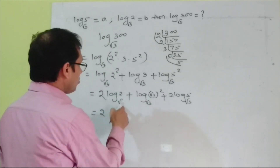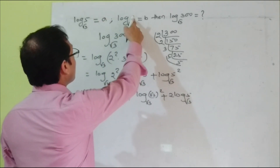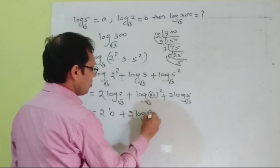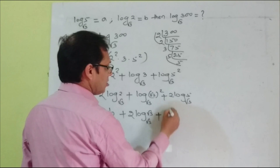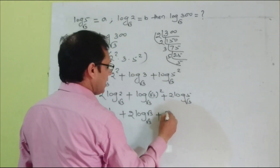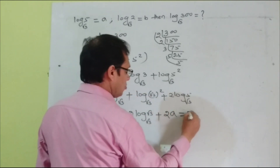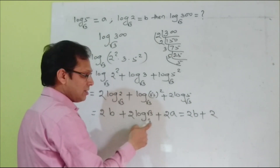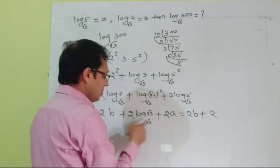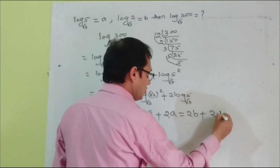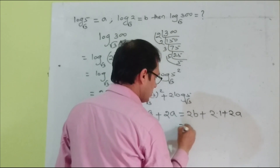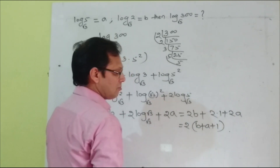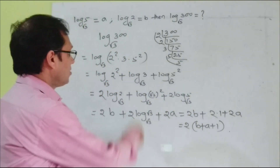So log 3 to the base √3 = 2 log √3 to the base √3 = 2 × 1 = 2. Given log 2 to the base √3 equals b, we get 2b. Given log 5 to the base √3 equals a, we get 2a. Therefore log 300 to the base √3 = 2b + 2 + 2a = 2(a + b + 1), or equivalently 2a + 2b + 2. The answer is 2(a + b + 1).